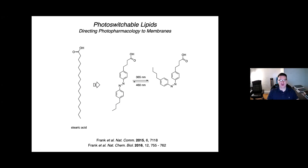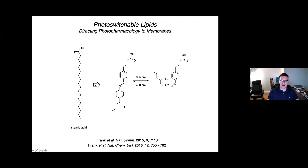Only about five years ago, the Trauner group started to apply this to lipids. The idea is that the azobenzene photoswitch is actually very hydrophobic, so it matches the biophysical aspect of a lipid tail. Initially, we installed the azobenzene into different lipids where a biological switch was known between a saturated and an unsaturated lipid, where the unsaturated lipid was known to be more potent. The linear form of the azobenzene mimics a more saturated lipid and the bent form mimics an unsaturated lipid. This was work pioneered by James Frank, a former PhD student in the Trauner lab, who is now on the faculty at the Vollum Institute in Portland.